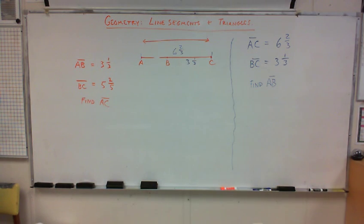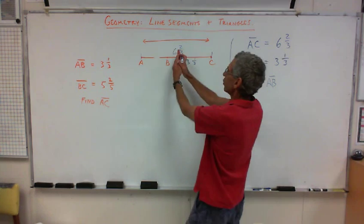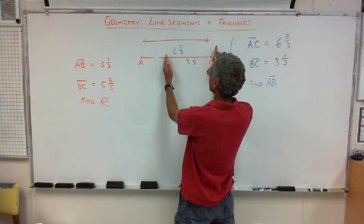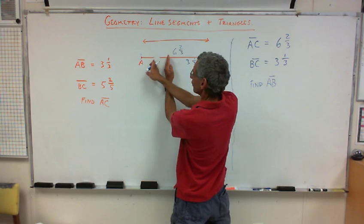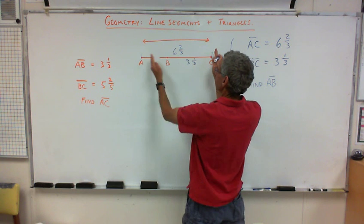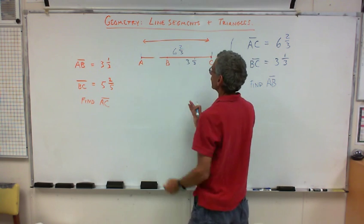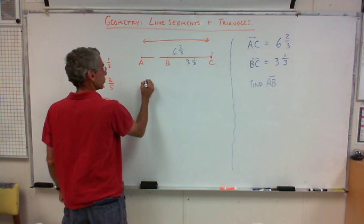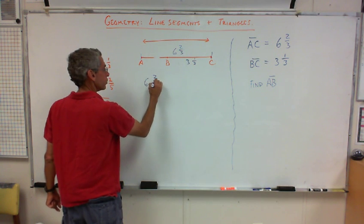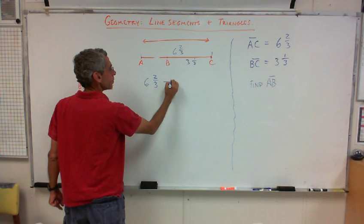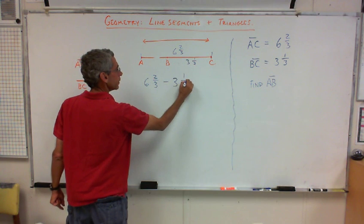What would I do? Emily. Subtract. Subtract. Exactly. This total minus this will give me this little leftover piece. The total minus the little, that one segment will give me the last segment. So, I'm going to do it. So, six and two-thirds minus three and a third.